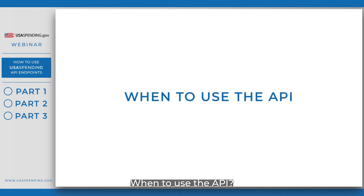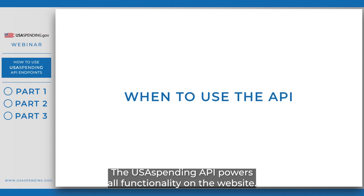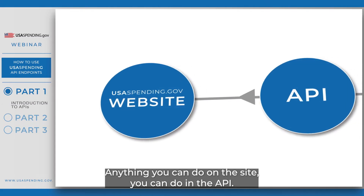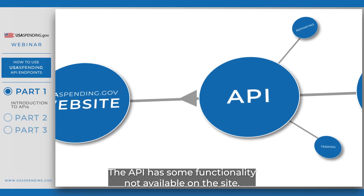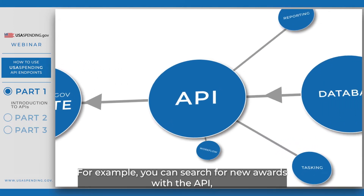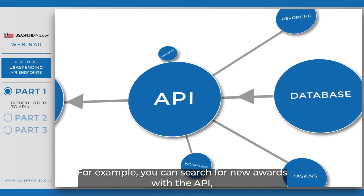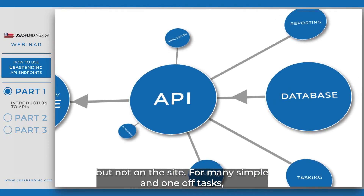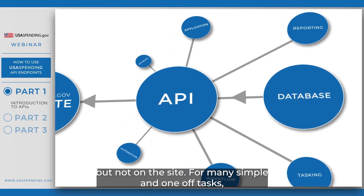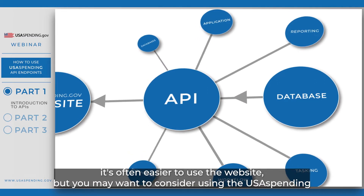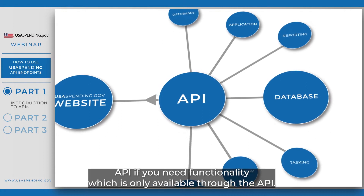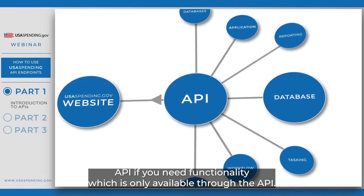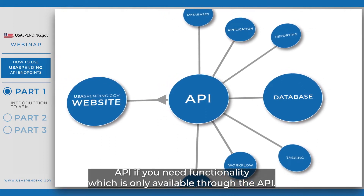The USA Spending API powers all functionality on the website. Anything you can do on the site, you can do in the API. The API also has some functionality not available on the site — for example, you can search for new awards with the API, but not on the site. For many simple and one-off tasks, it's often easier to use the website, but you may want to consider using the USA Spending API if you need functionality which is only available through the API.